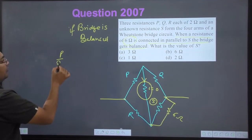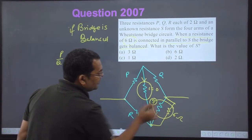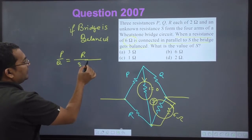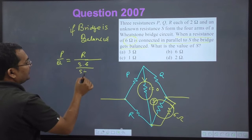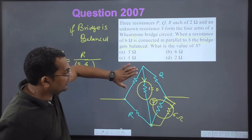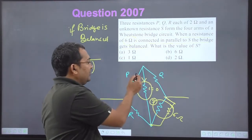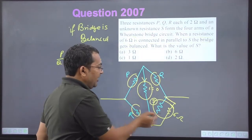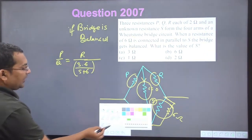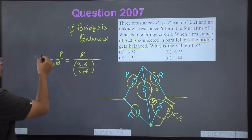If the bridge is balanced, then P/Q must be equal to R divided by the total parallel resistance of S and 6 ohm — that is R divided by (6S)/(S+6). The ratio of the upper arm must equal the ratio of the lower arm when the bridge is balanced. Since P and Q are both equal to 2 ohm, their ratio is 1.